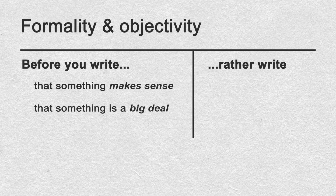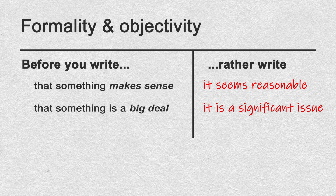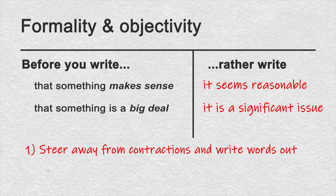In academic writing, you have to choose more formal options between different varieties of language. For example, when something makes sense, rather write that it seems reasonable. And when something is a big deal, rather write that it is a significant issue. You would also steer away from contractions and write words out.